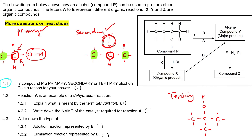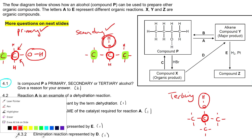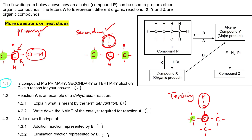Now if we look at this last one — the tertiary — you look at the OH, then the carbon touching it, then how many carbons are touching that carbon. One, two, three. And so we call it tertiary. This is how we distinguish between primary, secondary, and tertiary.